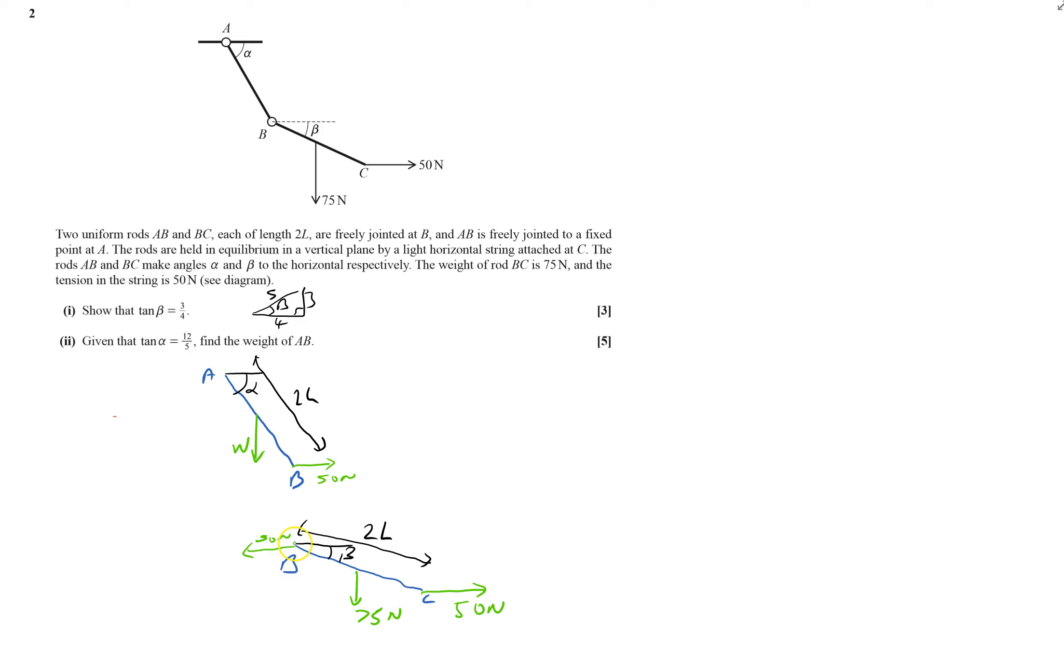And here's 75 going down, so there must be 75 newtons going upwards. And therefore there must be 75 newtons going downwards. And that may or may not help. So first thing, for 3 marks, I've got to show that tan beta is 3 quarters.